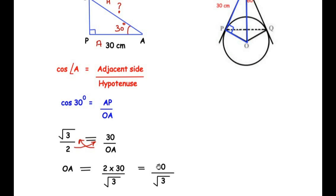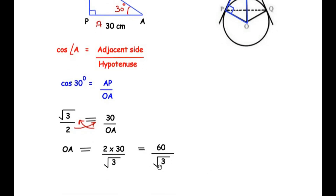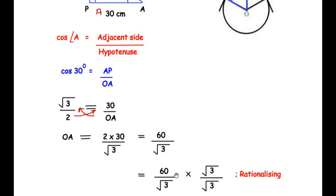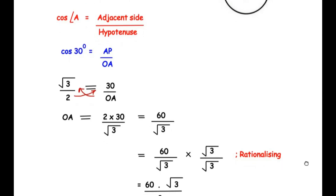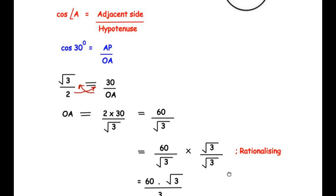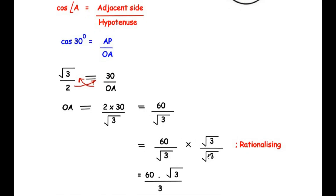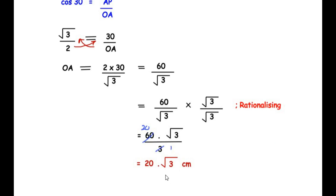Since we cannot have a square root in the denominator, we rationalize by multiplying numerator and denominator by √3. This gives 60√3 over (√3 × √3), which is 60√3 over 3. Since 3 divides 60 giving 20, the length OA equals 20√3 centimeters.